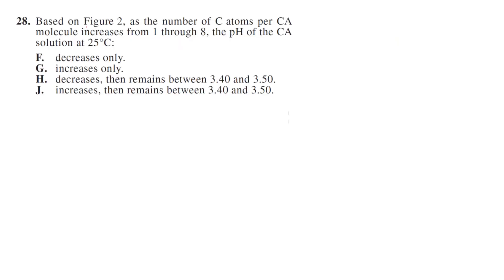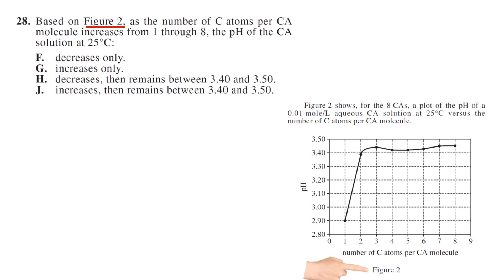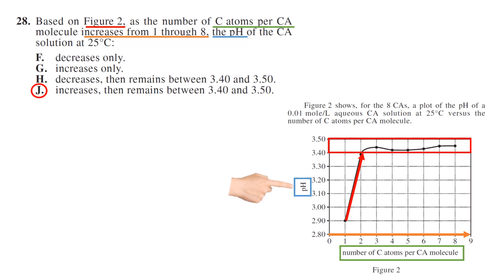Question number 28. Based on figure 2, as the number of carbon atoms per CA (that's that bottom axis) increases from 1 to 8, the pH of a CA solution at 25 degrees Celsius does what? Well, it increases and then it stays between 3.4 and 3.5. So your answer has to be J.